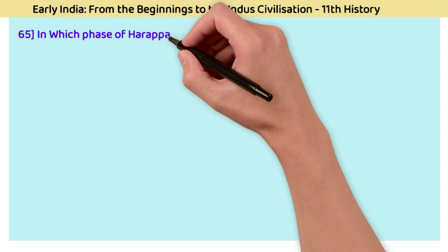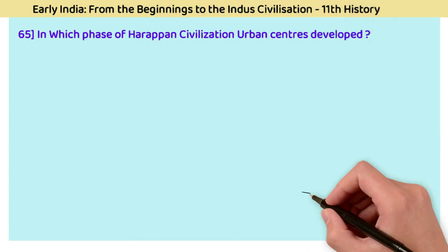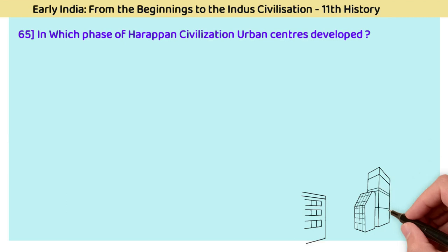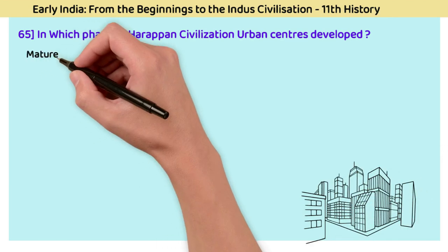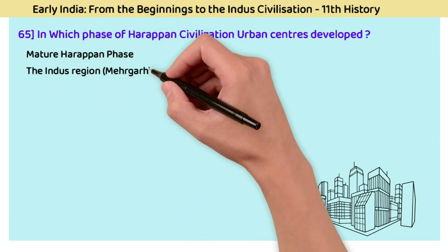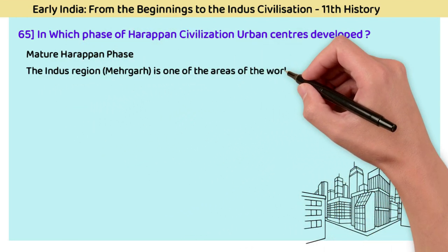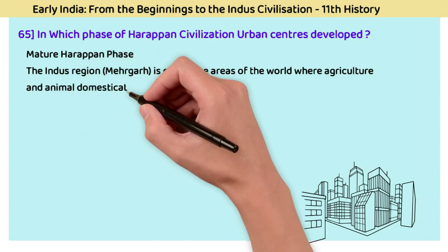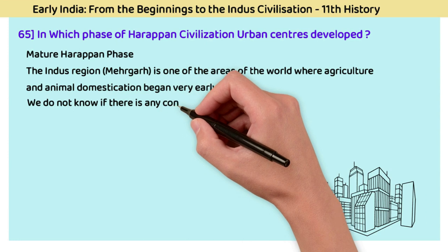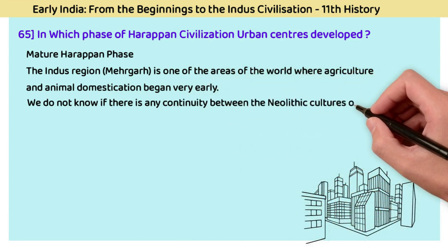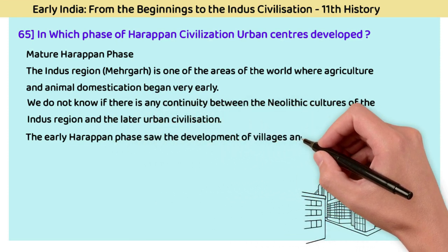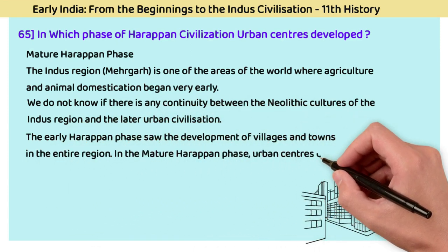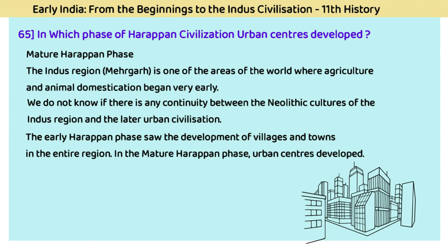Question 65: In which phase of the Harappan civilization did urban centers develop? The answer is the Mature Harappan phase. The Indus region of Mehrgarh is one of the areas of the world where agriculture and animal domestication started at a very early stage. The early Harappan phase saw the development of villages and towns in the entire region, and during the Mature Harappan phase, urban centers were developed.